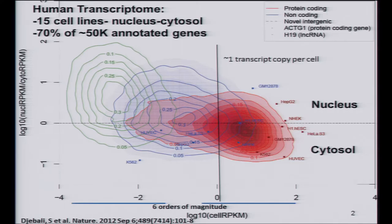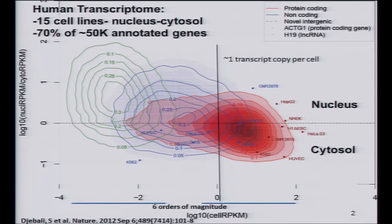This figure points to the fact that when you look at the landscape of expression of the human transcriptome — admittedly in a very narrow range of biological circumstances, namely 15 cell types, all of which have been in culture for a long time — we also looked at what was going on in the nucleus, at the chromatin, and in the cytosol in terms of RNA profile.